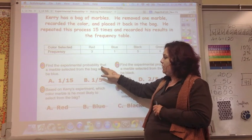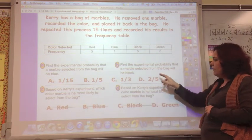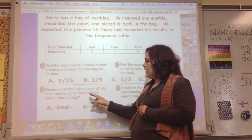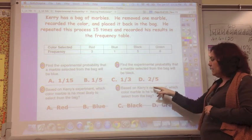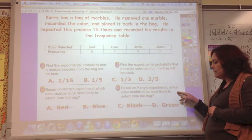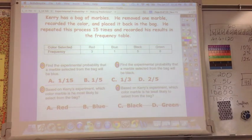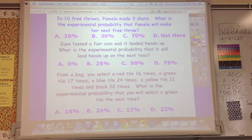Find the experimental probability that the marble selected from the bag will be blue. Find the experimental probability that the marble selected from the bag will be black. Based on Kerry's experiment, which color marble is he most likely to select from the bag — red, blue, black, or green? And which color marble is he least likely to select? Pause here, write your answers down, and be ready to vote.